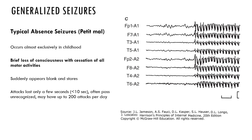The next kind of seizure is a kind of generalized seizure that is a little bit different. It is called an absence seizure, or petit mal seizure in the old terminology. It is a seizure that generally occurs in childhood, often with familial or inherited causes, although we haven't identified very many of the genetic markers associated with absence seizures.